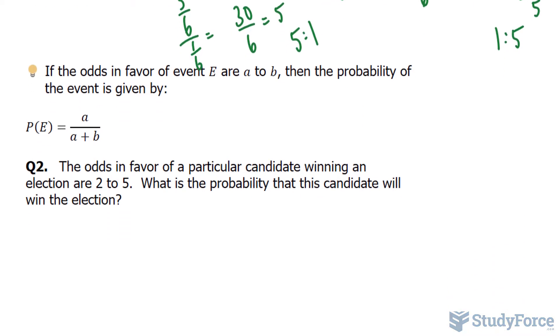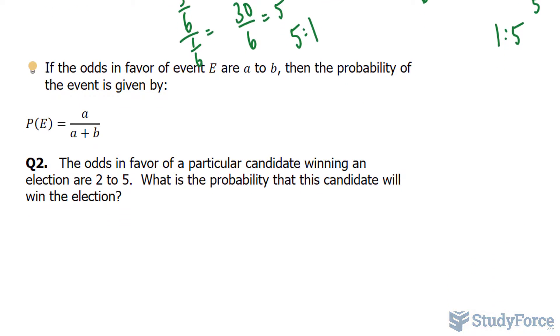In the next question, we're asked, the odds in favor of a particular candidate winning an election are 2 to 5. What is the probability that this candidate will win the election? So we're working backwards here. We'll call this first term of our ratio A, and this second term B.